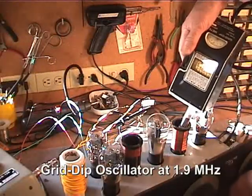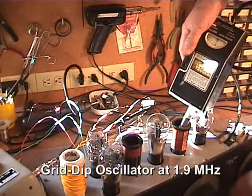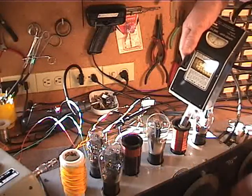We use a grid dipper. And here on the oscillator coil, we're tuning the oscillator coil up to 1.9 MHz.